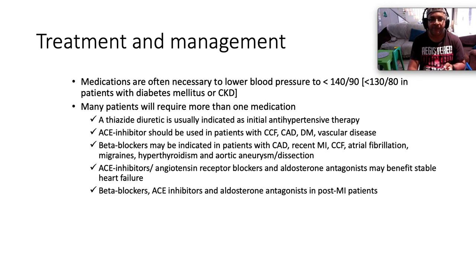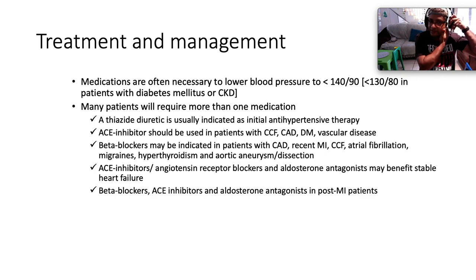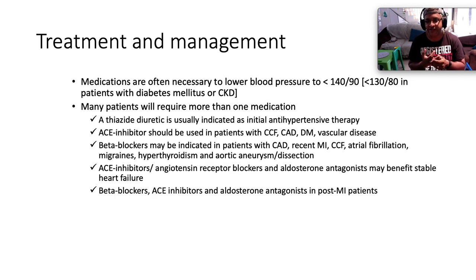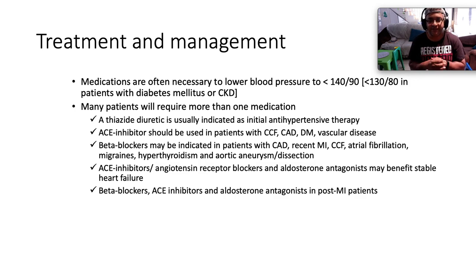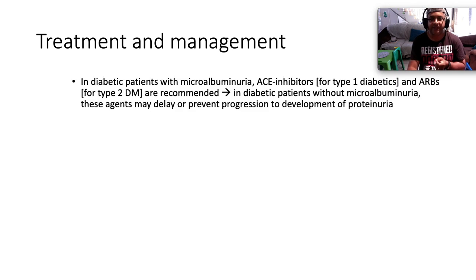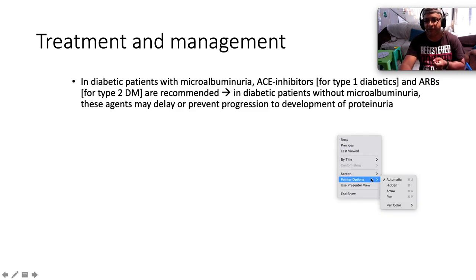Medications are often necessary to lower blood pressure below 140/90, or below 130/80 in the setting of diabetes or CKD. Many patients require more than one medication. A thiazide is generally indicated as initial antihypertensive therapy — watch for hyponatremia. Compelling indications for ACE inhibitors include congestive heart failure, coronary artery disease, diabetes, and vascular disease. Compelling indications for beta blockade include coronary artery disease, recent MI, congestive heart failure, atrial fibrillation for rate control, migraine headaches, hyperthyroidism, and acute aortic aneurysm or dissection.